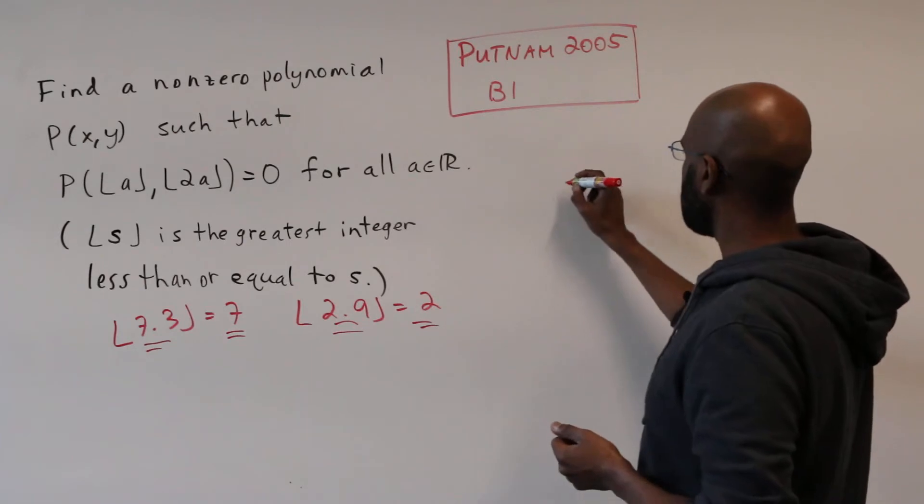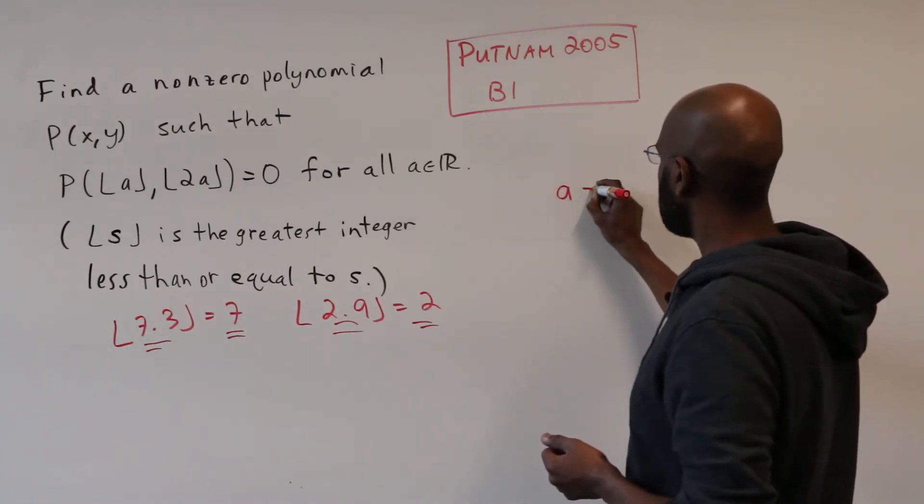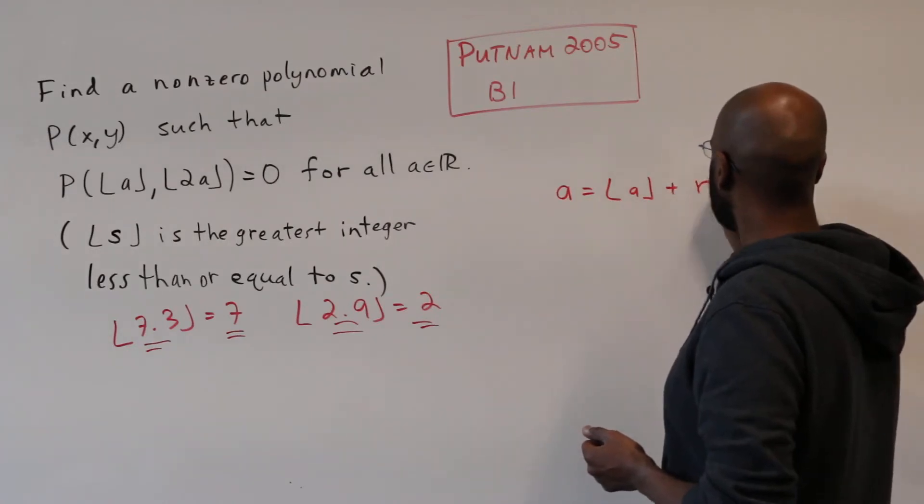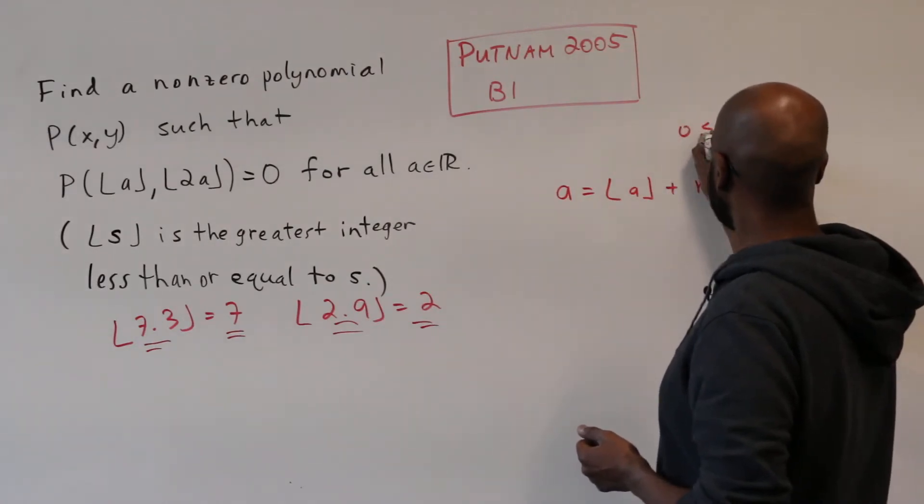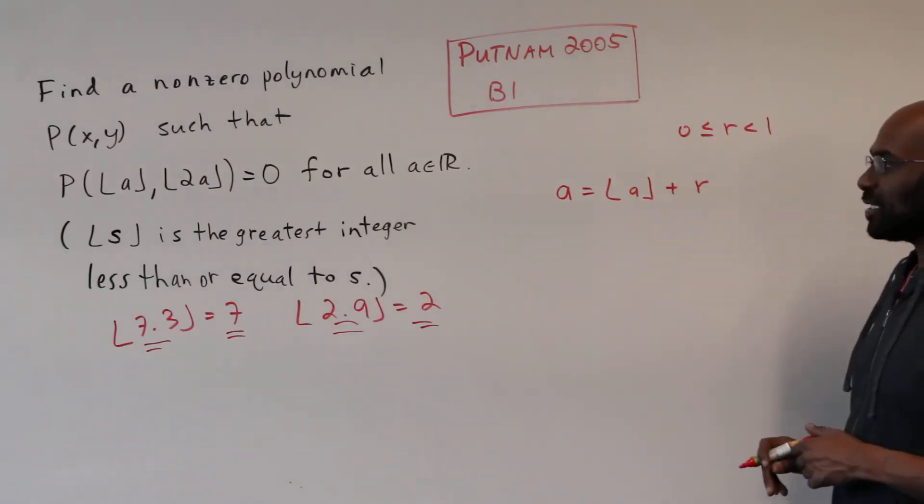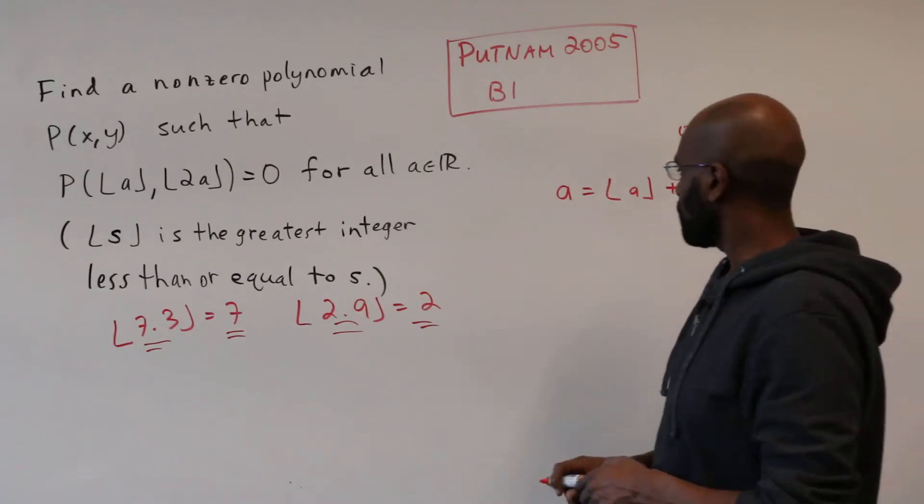So if I take any real number a, I can write it as the floor of a plus some number r where r is between 0 and 1. Less than or equal to, or greater than equal to 0 and strictly less than 1.